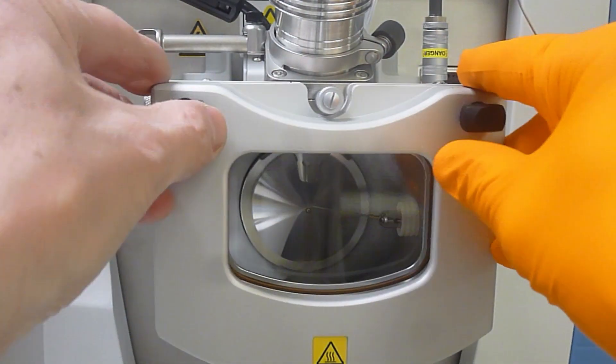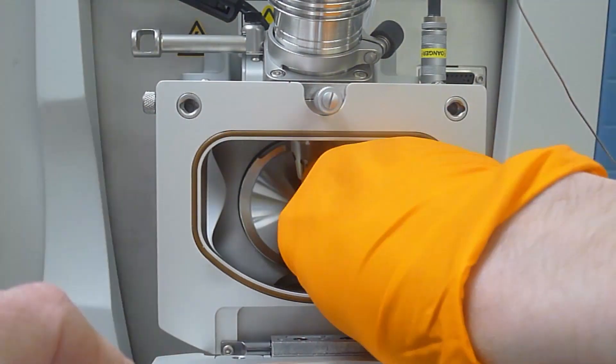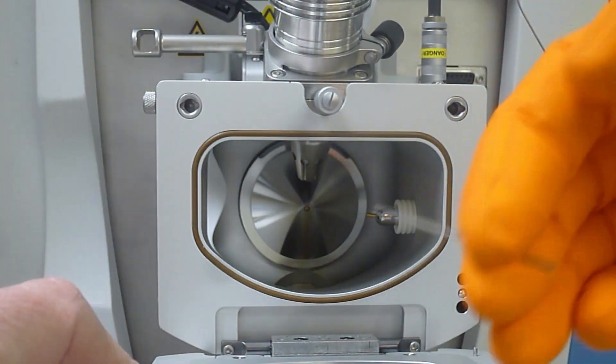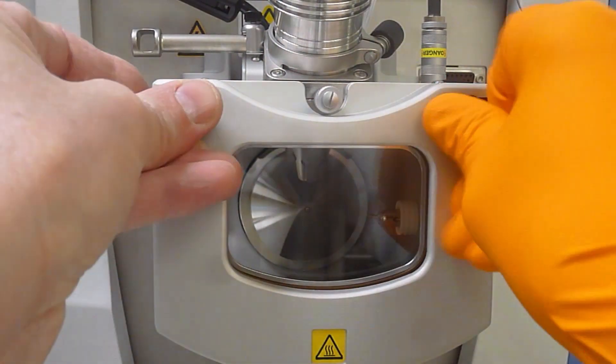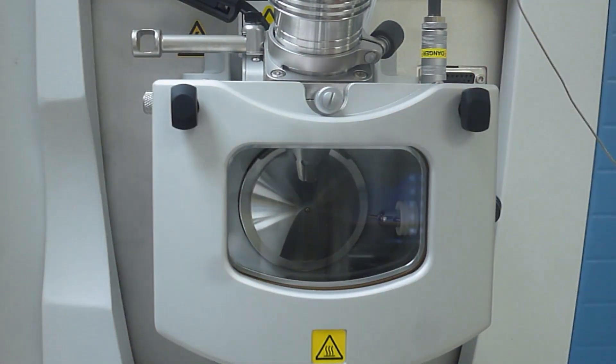To remove the APCI probe, first open the front flap by turning the black knobs and remove the APCI pin. Then you can close the front flap again. Secure with the two black knobs by a quarter turn.